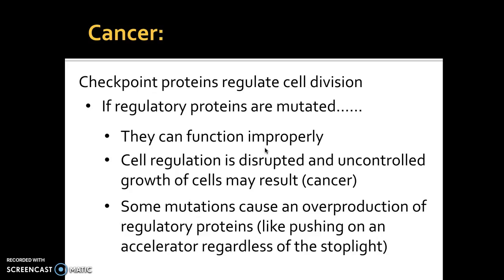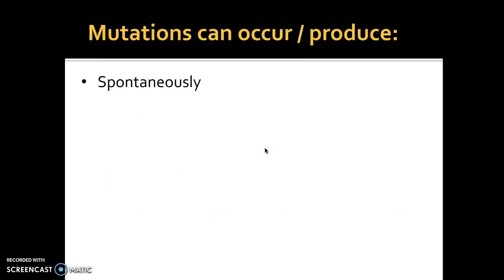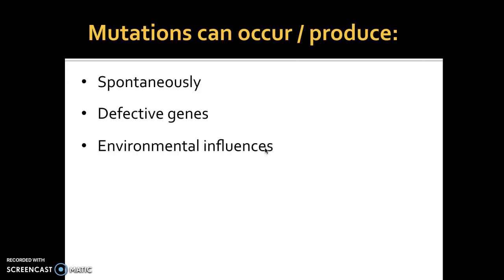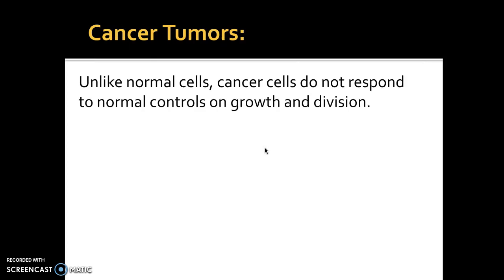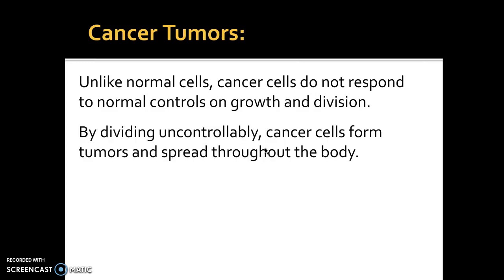Some mutations cause an overproduction of regulatory proteins. If too many of a specific protein are produced, it's like stepping on the gas pedal — it makes your body divide too quickly. These mutations in humans and other animals or plants can happen spontaneously, can be the result of a defective gene passed on genetically, or can be caused by environmental factors — for example, the sun can cause our skin cells to change and we can develop skin cancer. There are many things that can cause tumors to develop.